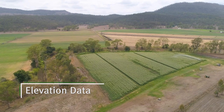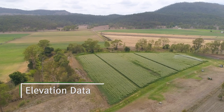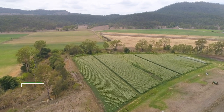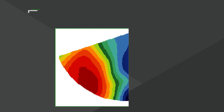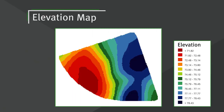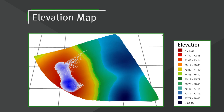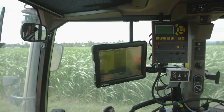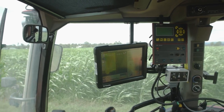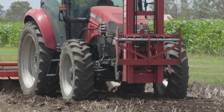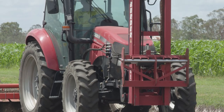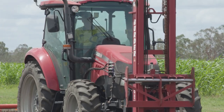RTK tractor guidance systems also have the capability to log elevation data. This type of map can be used to model surface water flows and forms the basis for drainage modelling to inform levelling operations and drainage works. As this data can be captured with on-farm machinery, this requires minimal capital outlay except for data processing and modelling.